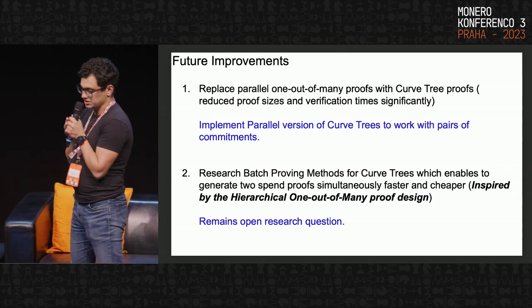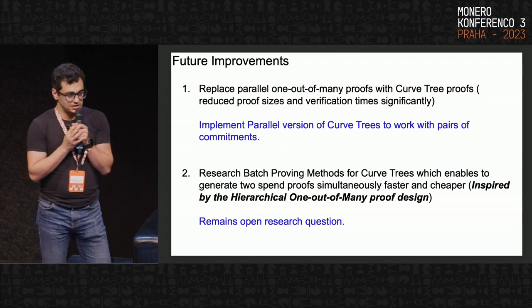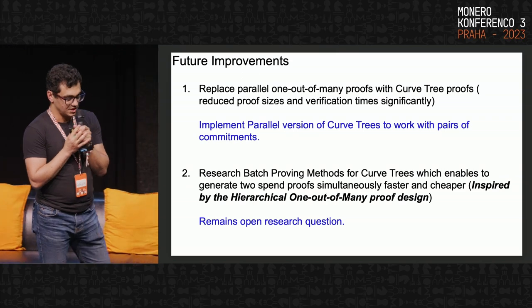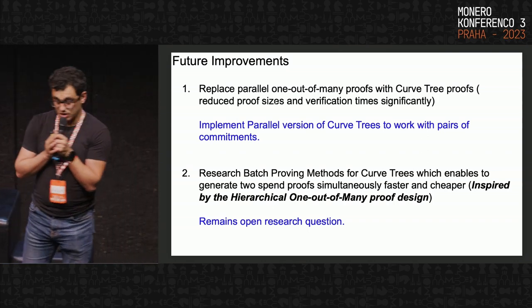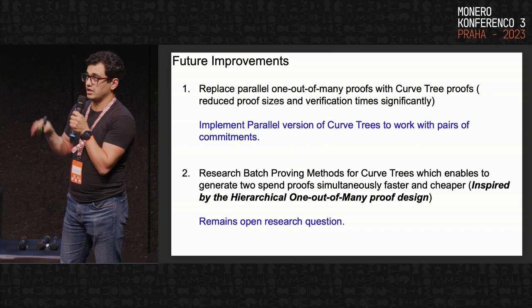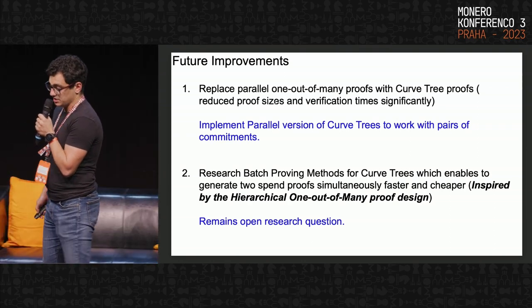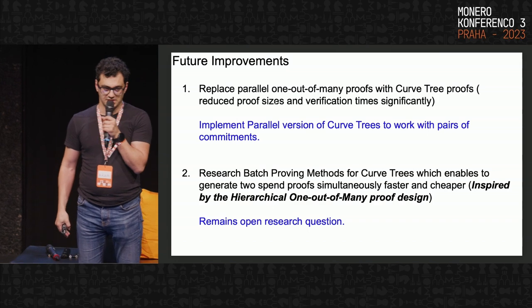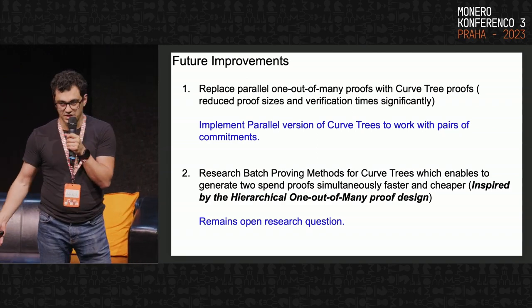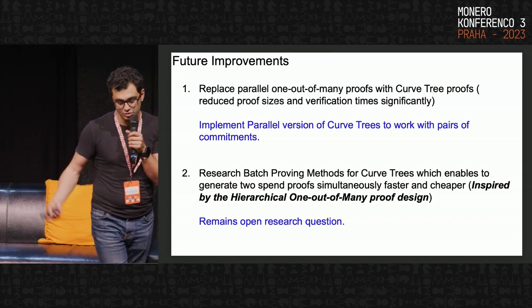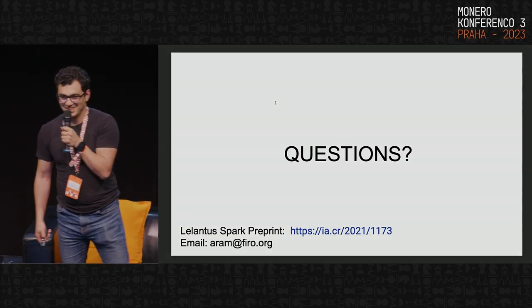Another interesting open research question is researching a batch proving method for curve trees. This is inspired by original work we did at Firo called hierarchical one-out-of-many proofs, which enabled a very efficient batch proving technique. It remains an open and interesting research question whether we can implement something similar with curve trees to optimize proof generation, since in practice a spend transaction always requires generating proofs for at least two inputs. Thank you.